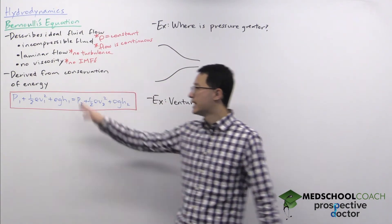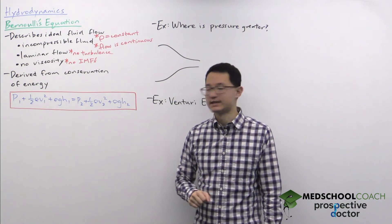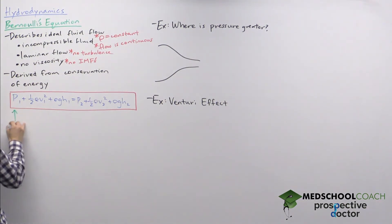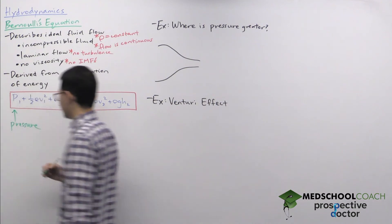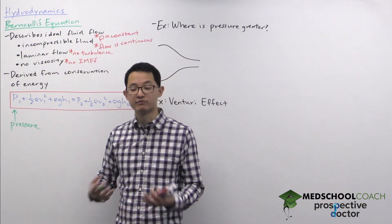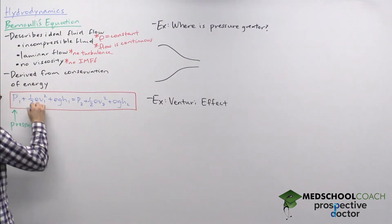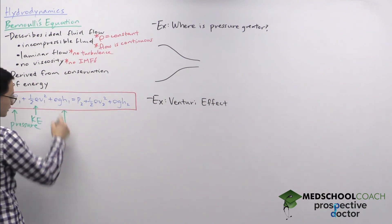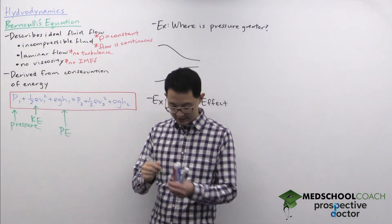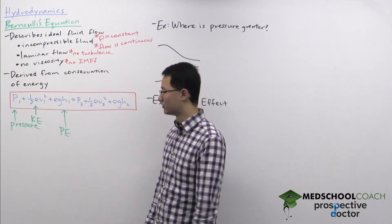Bernoulli's equation is derived from conservation of energy. Looking at the equation, we can see pressure terms, then the term one-half rho v squared — which should remind you of one-half mv squared for kinetic energy — and finally rho gh, which is very similar to mgh used for potential energy. So essentially this is conservation of energy applied to fluids undergoing ideal fluid flow.